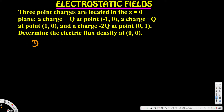They are asking to find the electric flux density D, which equals epsilon times E. So we need to find the electric field E first. In order to find the electric field, the best way is to first draw the diagram.